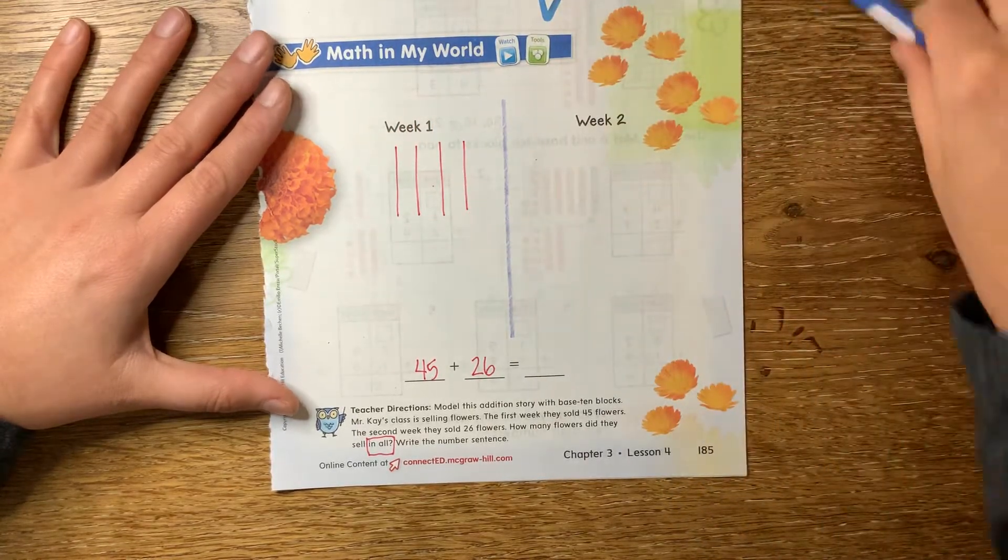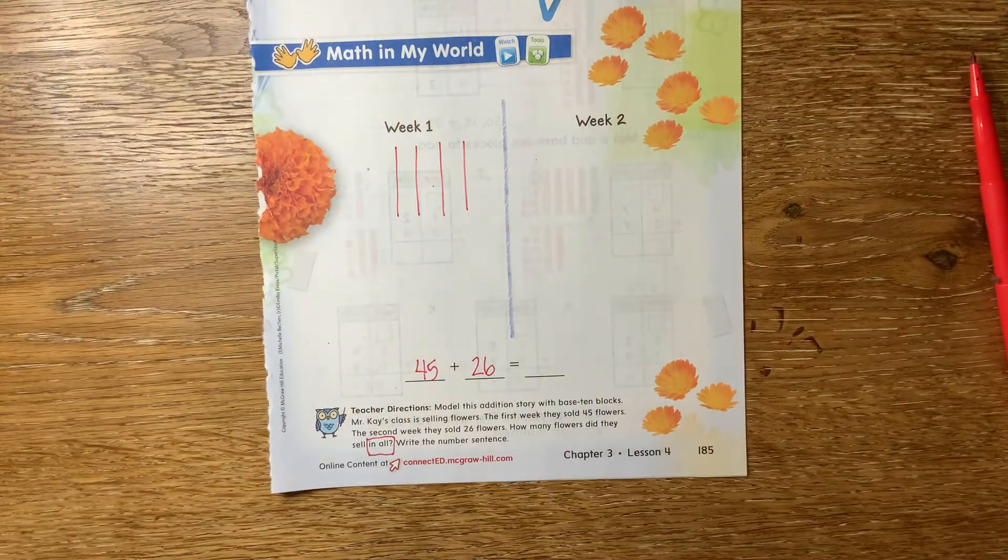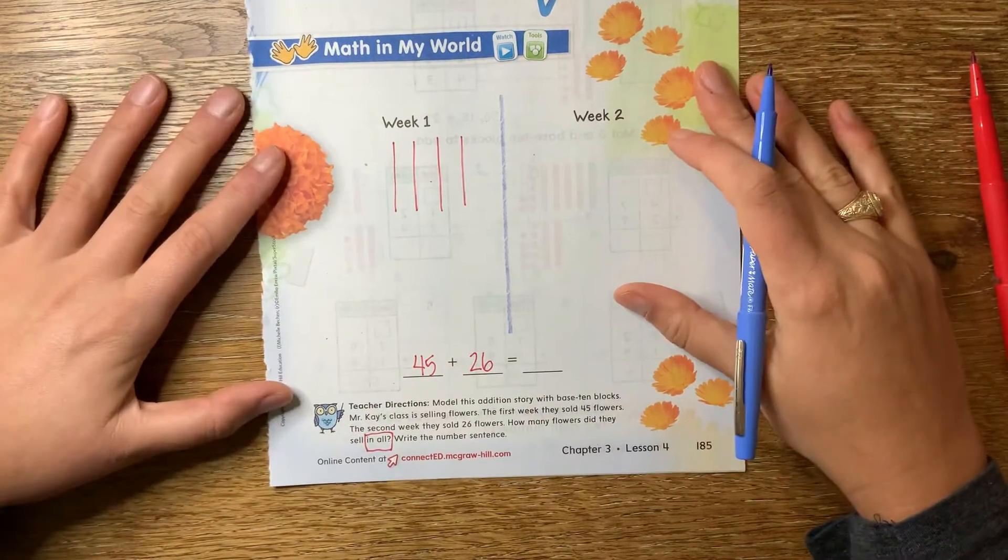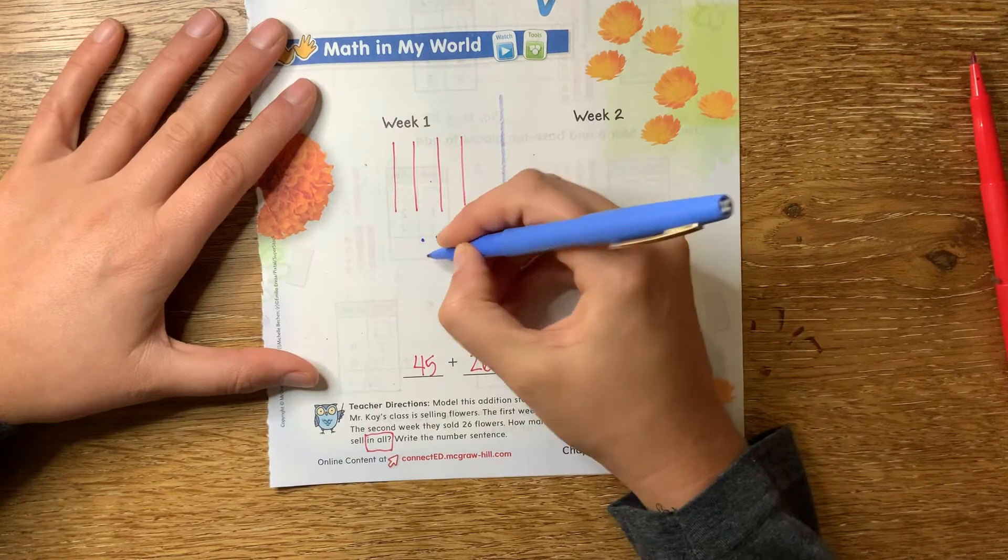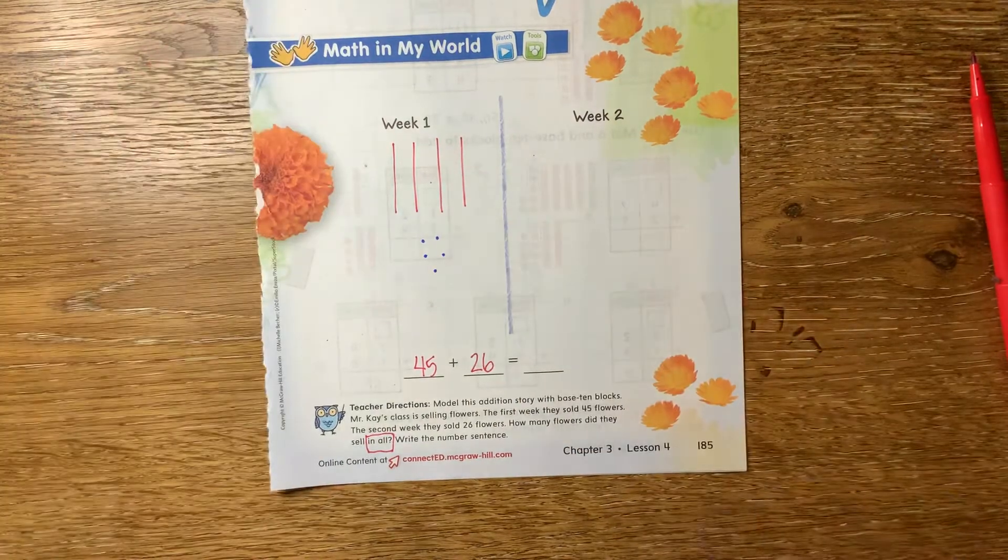And then how many ones do I draw for 45? How many ones are in that number? Five. One, two, three, four, five.